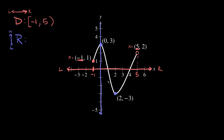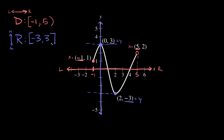To find the range we use the y-axis, because it goes up and down and tells us how high or low a point is. For the highest closed circle we look at the y-coordinate: y equals positive 3. For the lowest point, again looking at the y-coordinate, it's at y equals negative 3. So the range goes from negative 3 to positive 3, and since both are closed circles we use brackets around both.